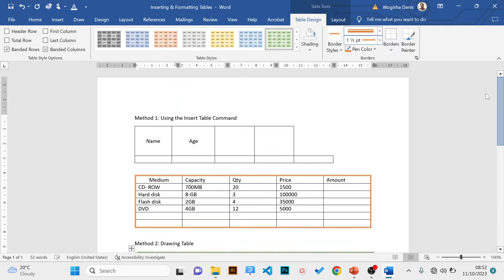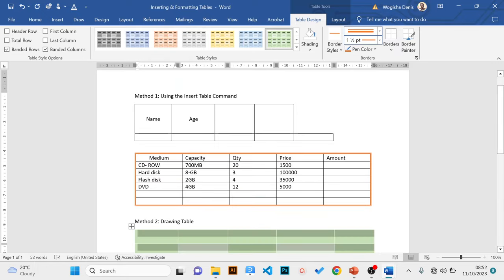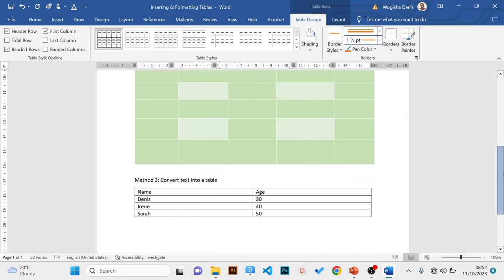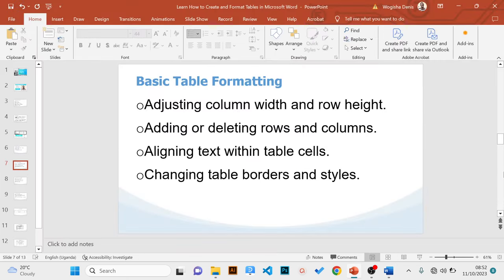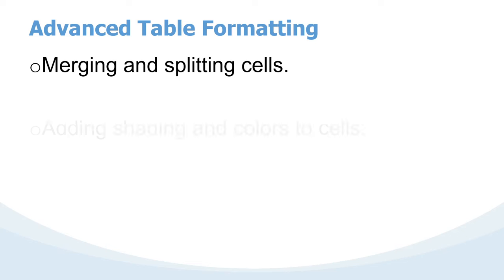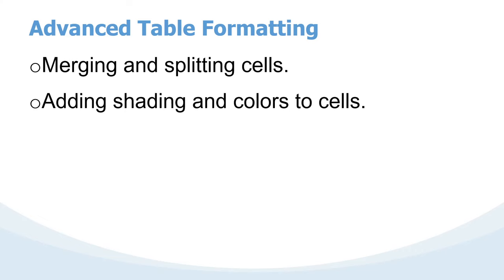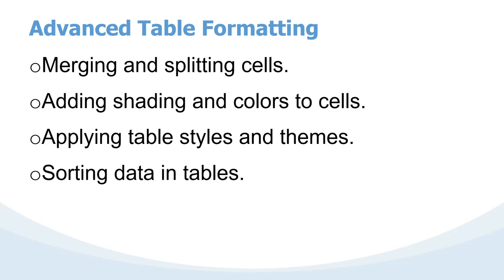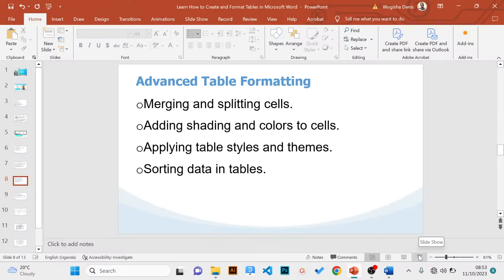That concludes basic-level formatting — we looked at adding new rows, deleting rows, expanding column width, adding borders, and adding table styles. The next part covers formatting a table at advanced level. This entails: merging and splitting cells, adding shading or colors to cells, applying table styles or themes, and sorting data in tables. Let's begin with merging.